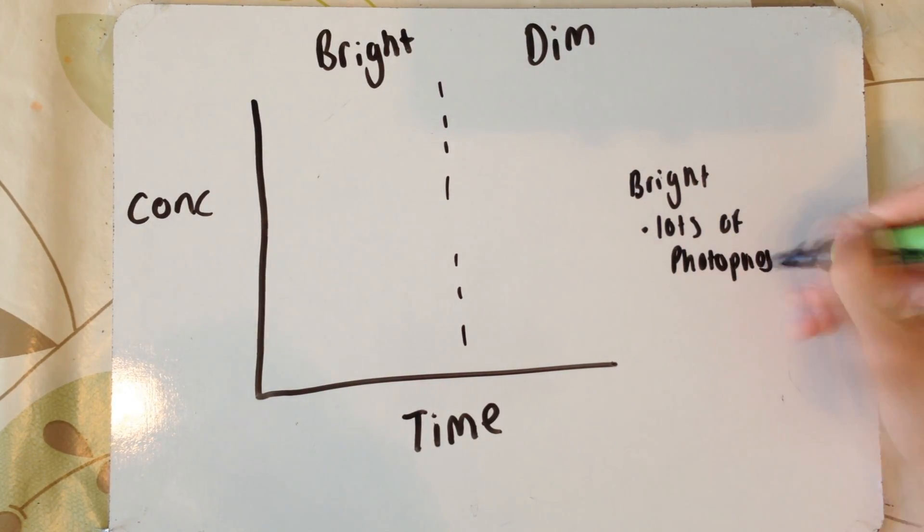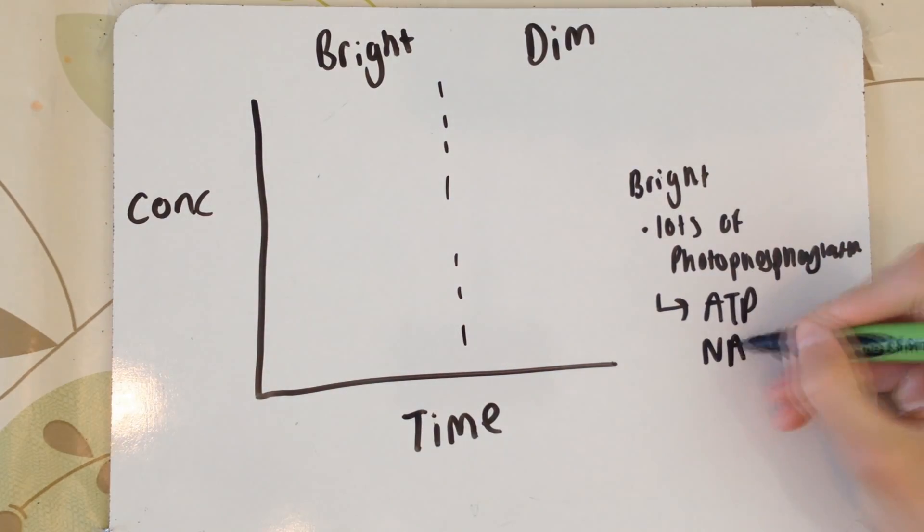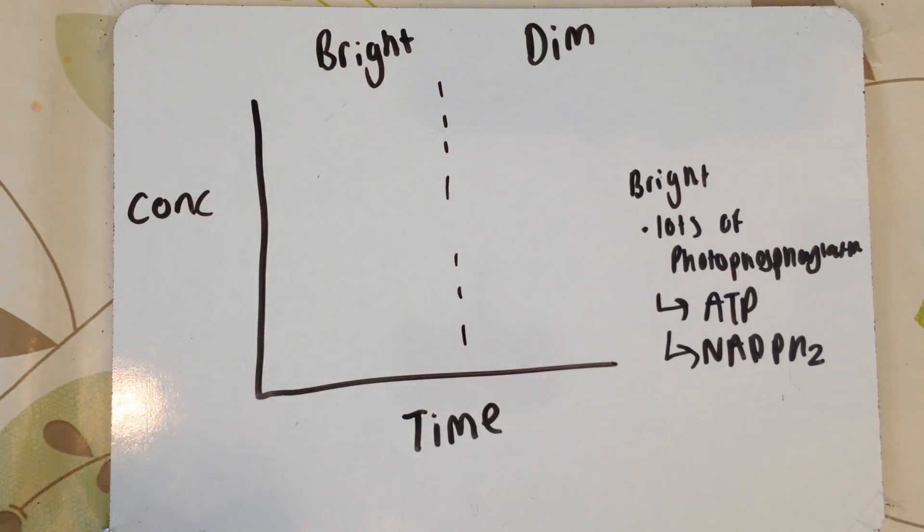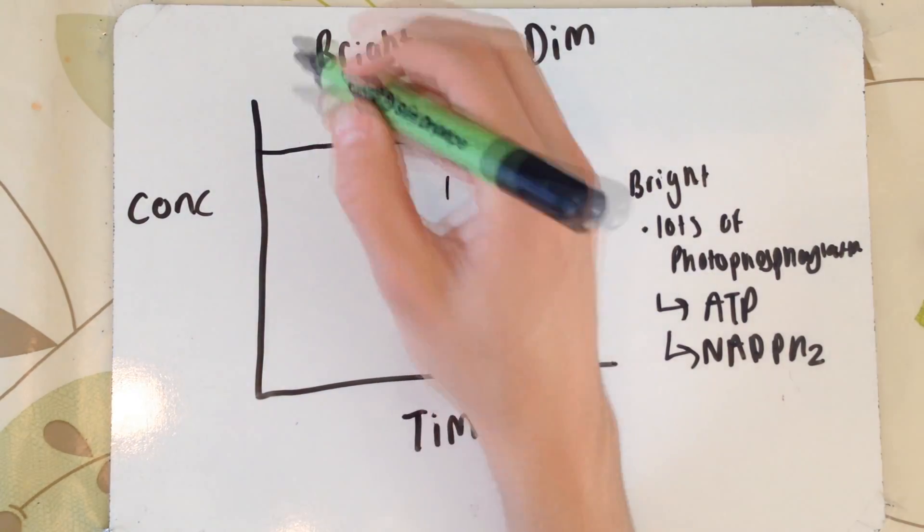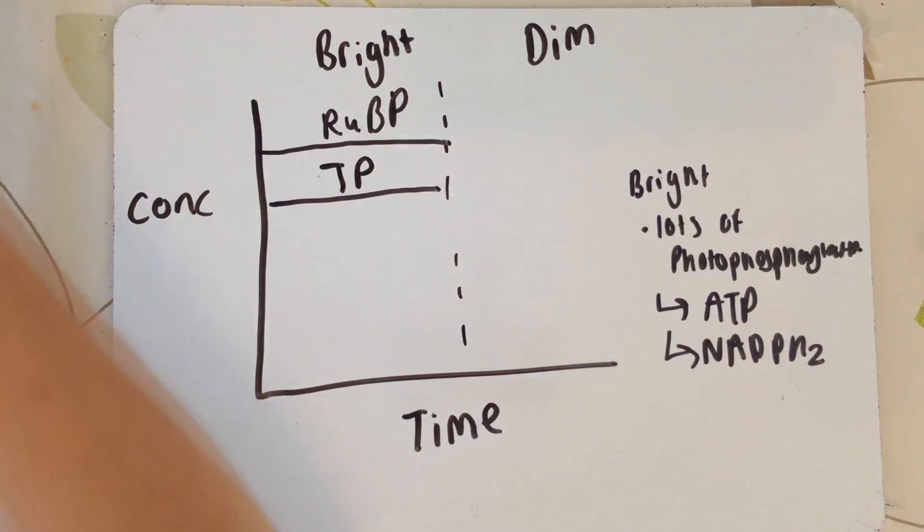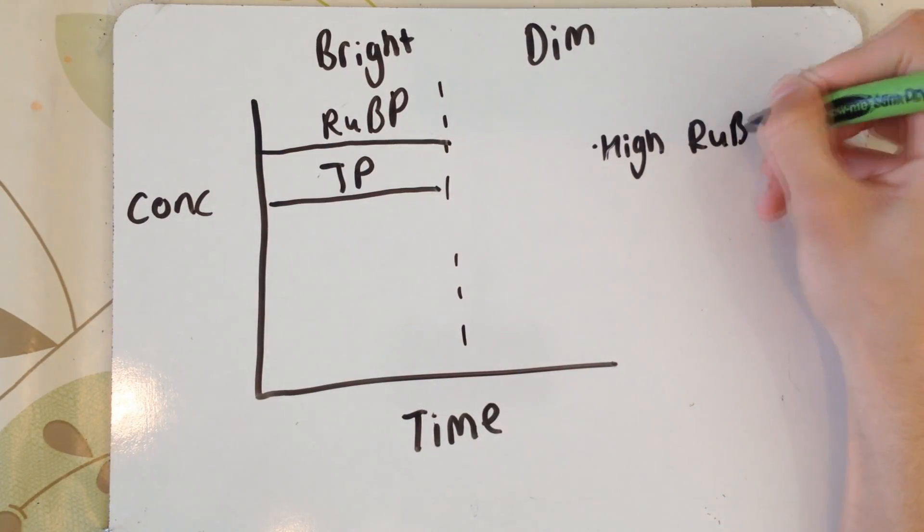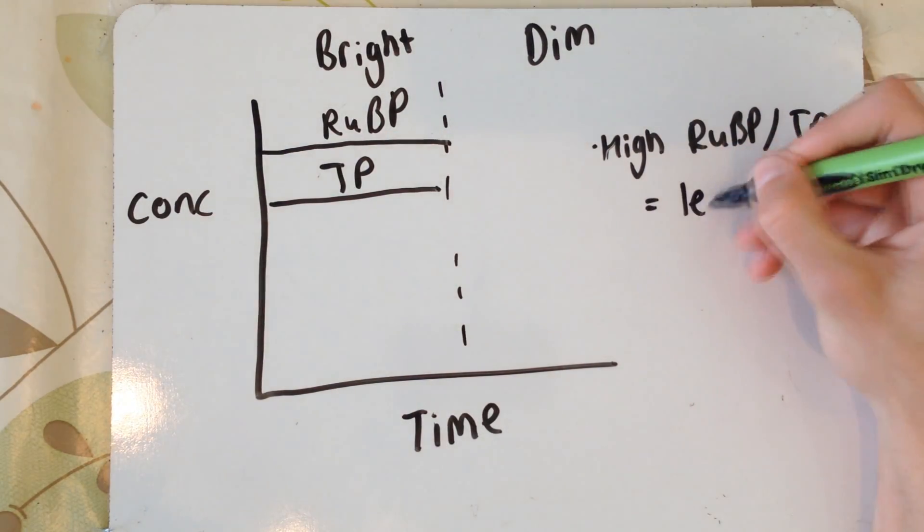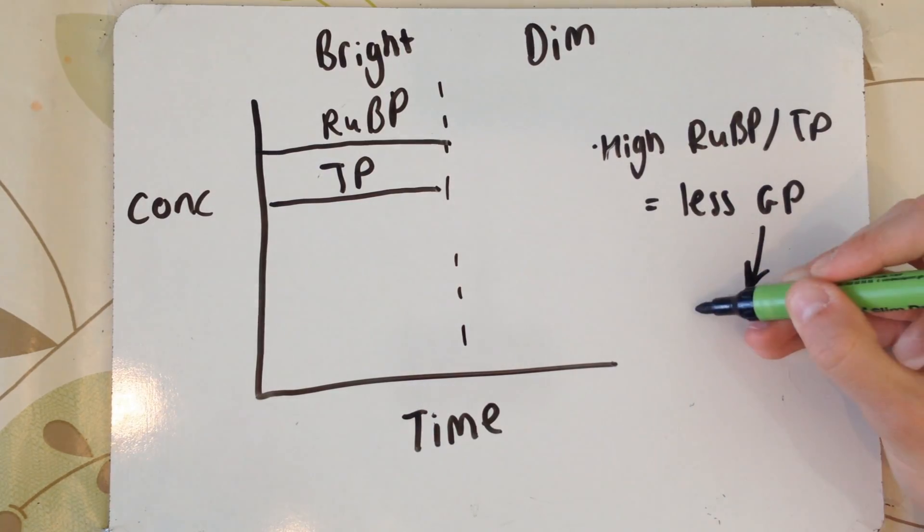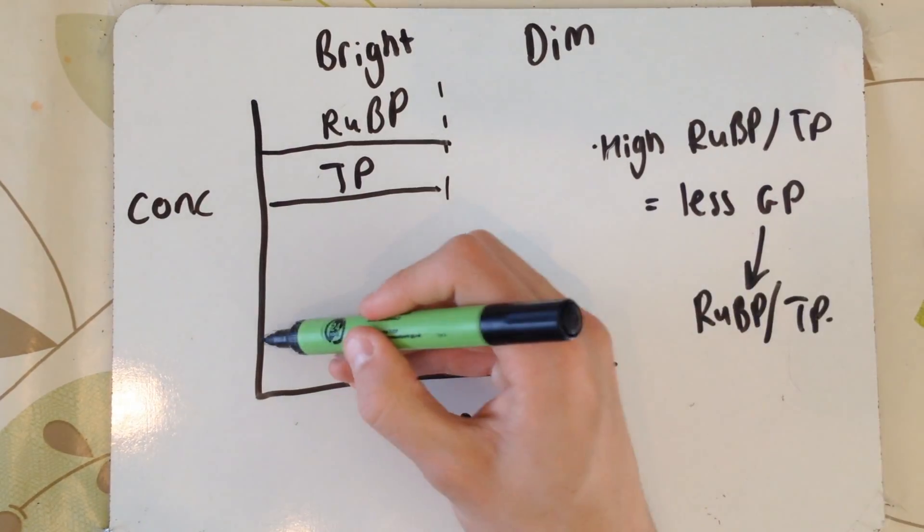In bright light, if you've got lots of light-dependent reactions occurring, you're going to get a lot of the products of those reactions, which means you've got a lot of ATP and a lot of reduced NADP. As we know, ATP and reduced NADP are used to make RUBP and TP. So if you've got a lot of stuff that makes RUBP and TP, we're therefore going to have higher concentrations of RUBP and TP. However, as you know, glycerate phosphate is also used to make these. This means you can have lower concentrations of GP.